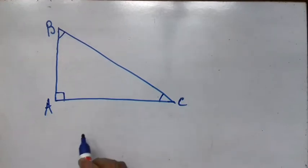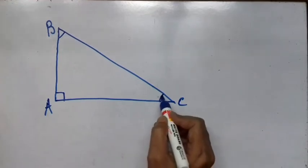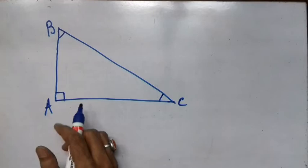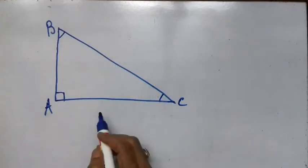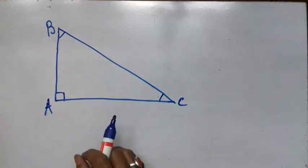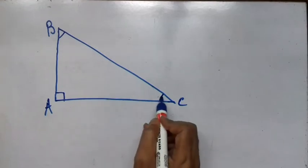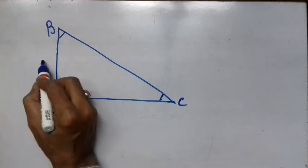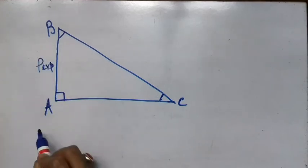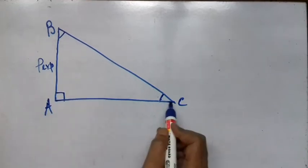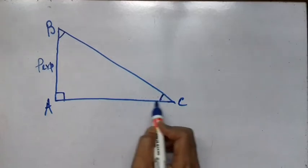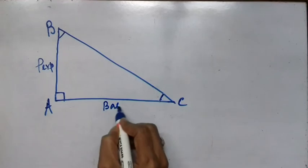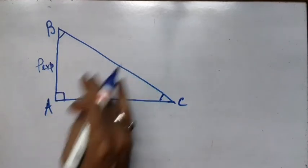If the discussion is about a particular angle, its opposite side is called the perpendicular. For example, if we consider angle ACB — angle C — the side opposite to it is the perpendicular. The side adjacent to the concerned angle is the base, and the side opposite to the right angle is always the hypotenuse.